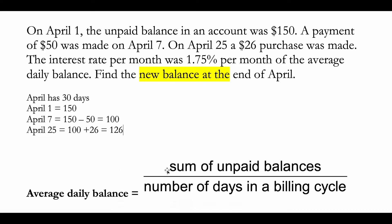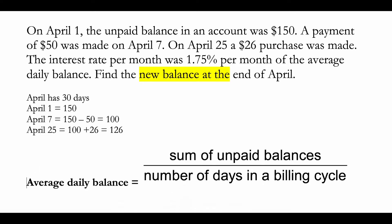You're told the interest rate per month is 1.75% using the average daily balance method. To find the average daily balance, you add the sum of unpaid balances divided by the number of days in the billing cycle.